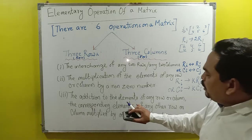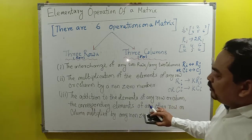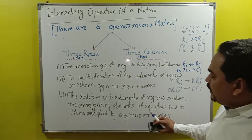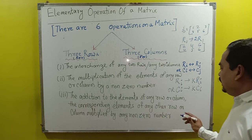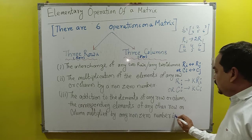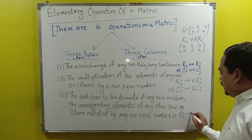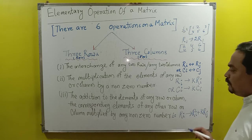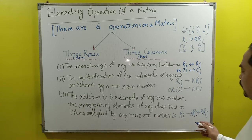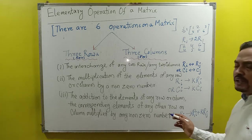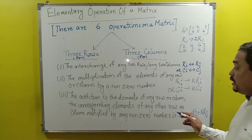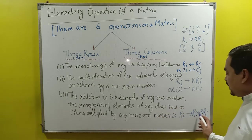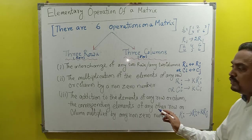Third operation: addition to the elements of any row or column of the corresponding elements of any other row or column multiplied by any non-zero number. Symbolically, R_i is replaced by R_i + K·R_j. Suppose we go to the first row and take the second row as R_j; if any number K is multiplied by that row and added, that is the third operation.